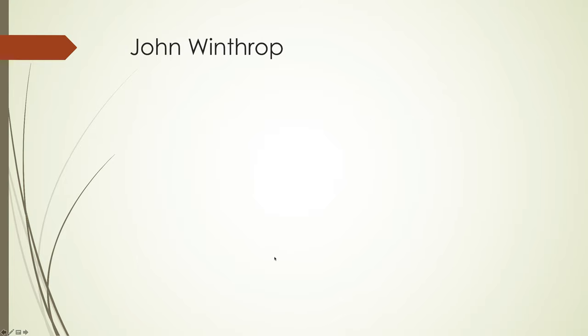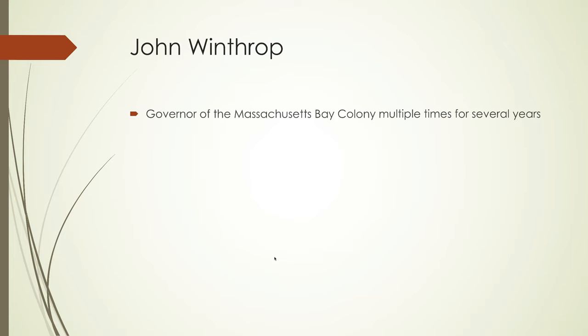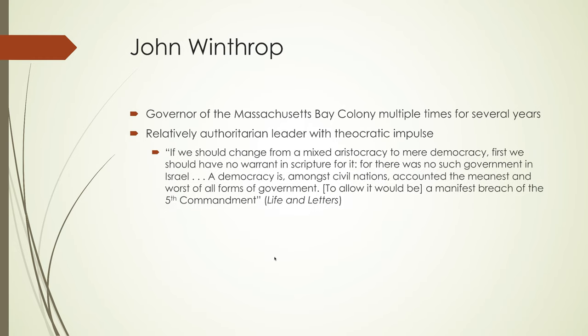One of the most important figures in early Puritan society was John Winthrop, the governor of the Massachusetts Bay Colony several times. He was a relatively authoritarian leader with theocratic impulses, meaning that he let his religious views influence the way that he governed. Winthrop justifies his view in his Life and Letters when he says: "If we should change from a mixed aristocracy to mere democracy, first we should have no warrant in scripture for it, for there was no such government in Israel. A democracy is, amongst civil nations, accounted the meanest and worst of all forms of government."